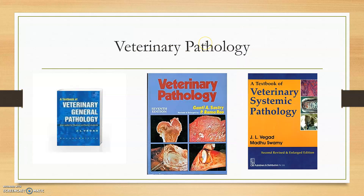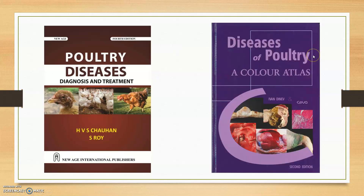Moving to veterinary pathology — mainly two books are used among all students: Ganti A. Shastri and J.L. Vegad. Vegad and Ganti A. Shastri books are mainly used. These can also be used in the case of diseases of poultry, including poultry atlases.